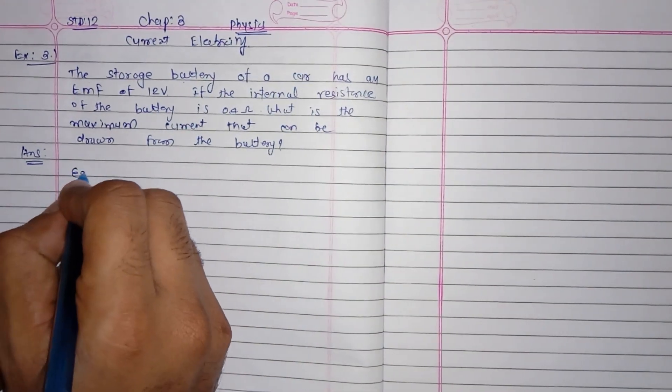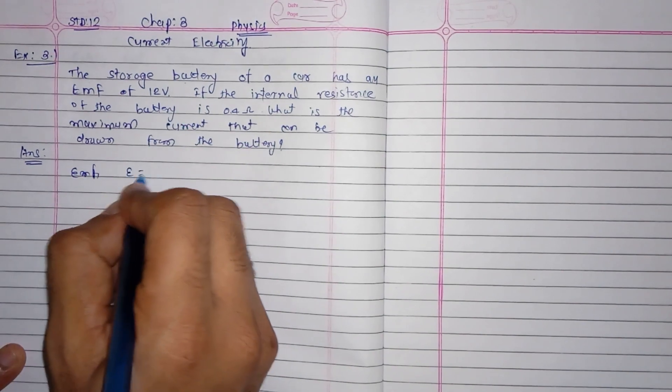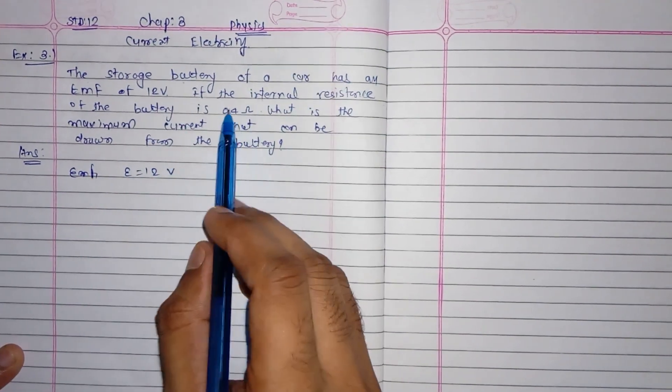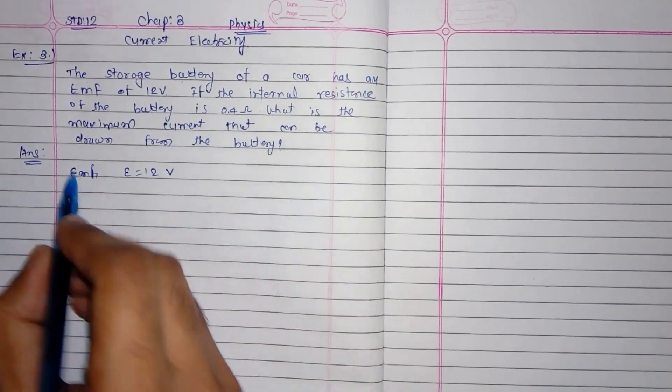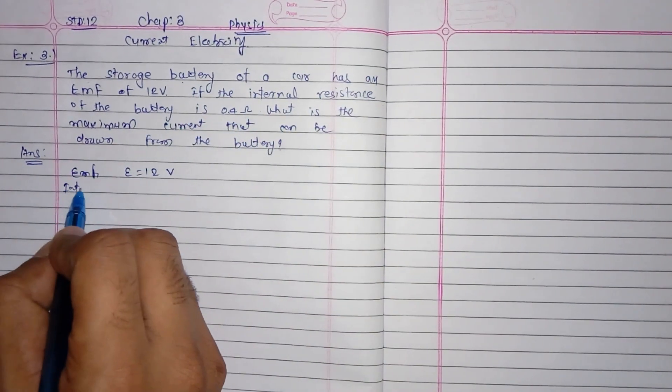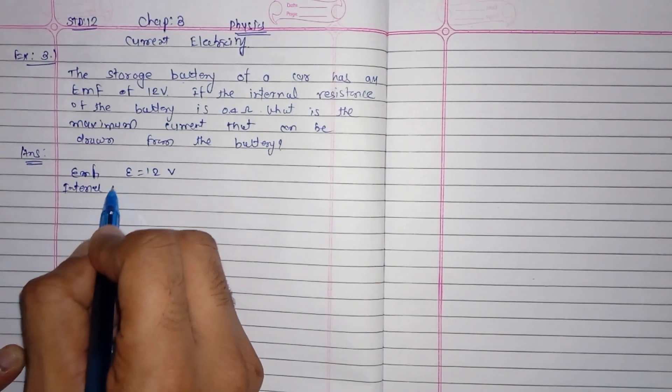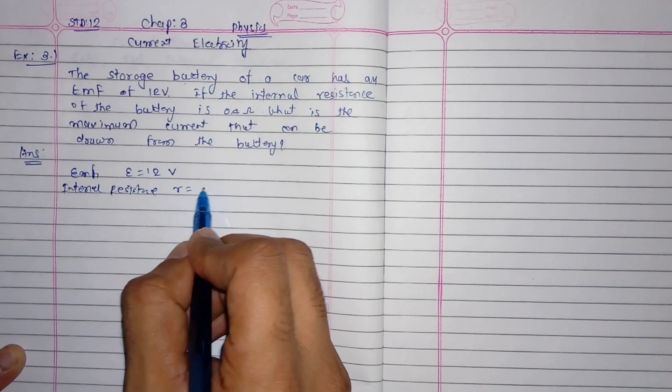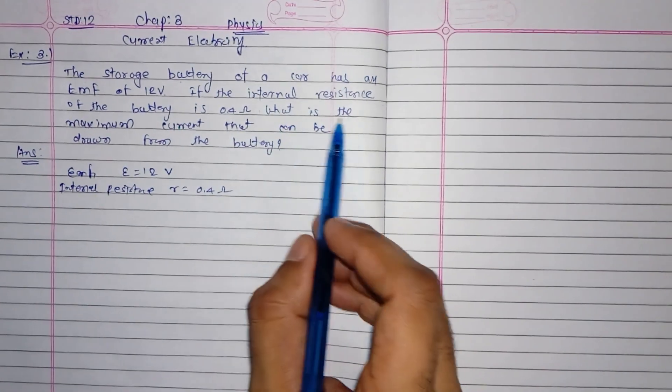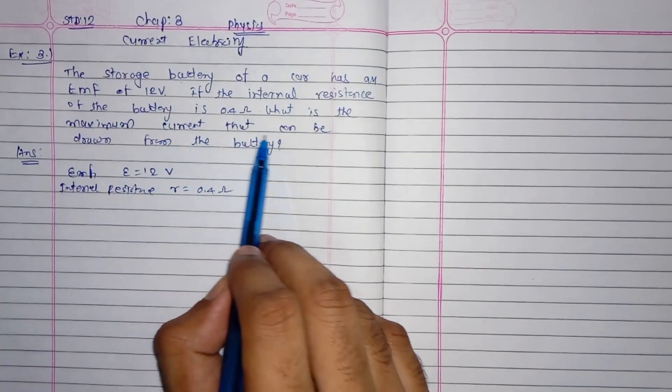If the internal resistance of the battery is 0.4 ohm, so internal resistance small r is given as 0.4 ohm. Now, what is the maximum current that can be drawn from the battery?